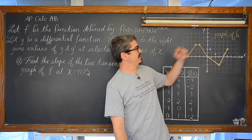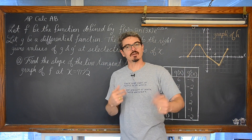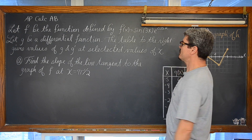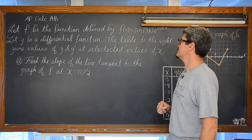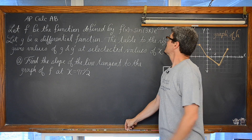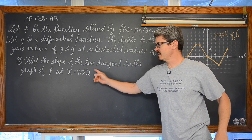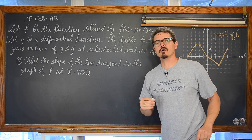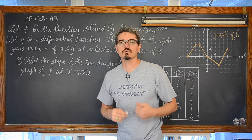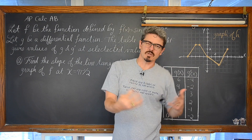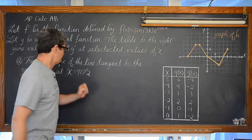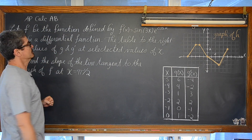Find the slope of the line tangent to the graph of f(x) = sin(3x) · e^(cos x) at the value of π/2. So let's make sure that we are comfortable using the product rule and the chain rule at the same time, and knowing our unit circle with evaluating that derivative at π/2.